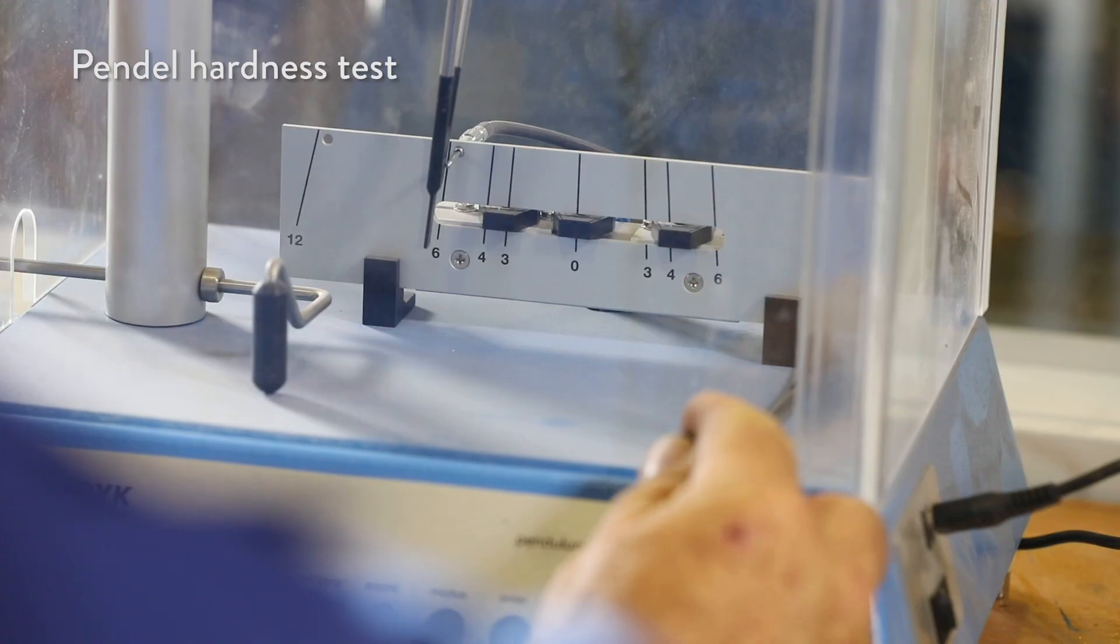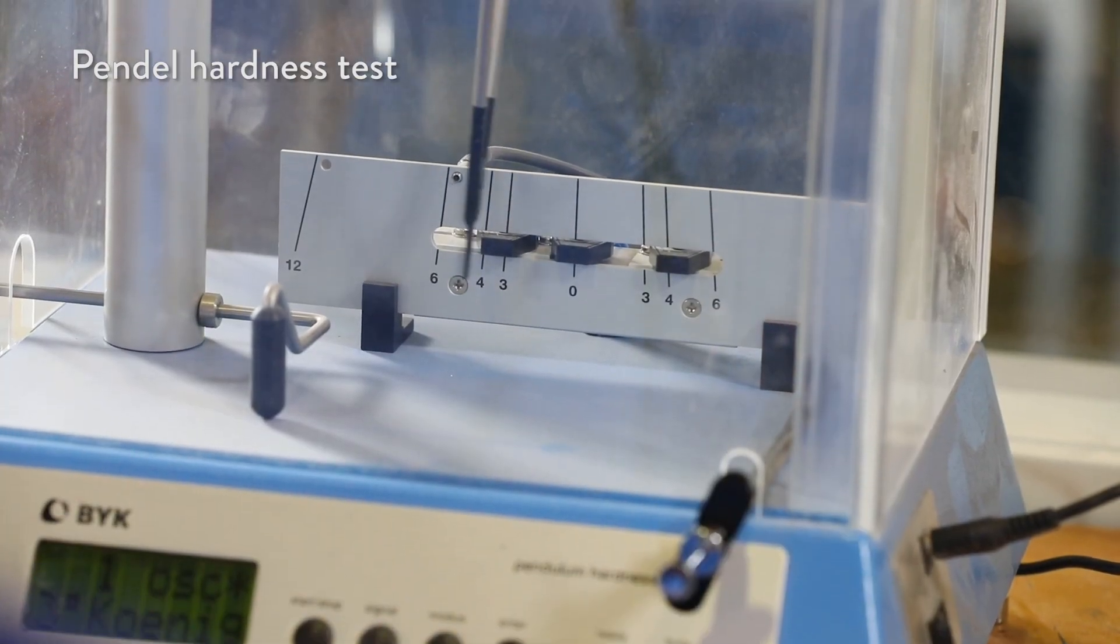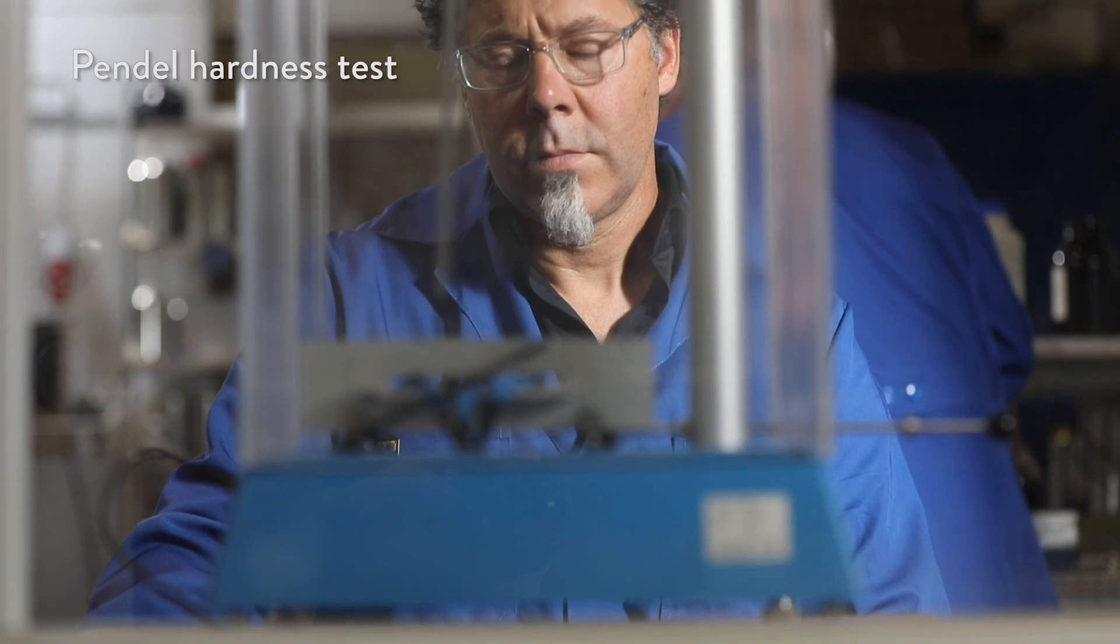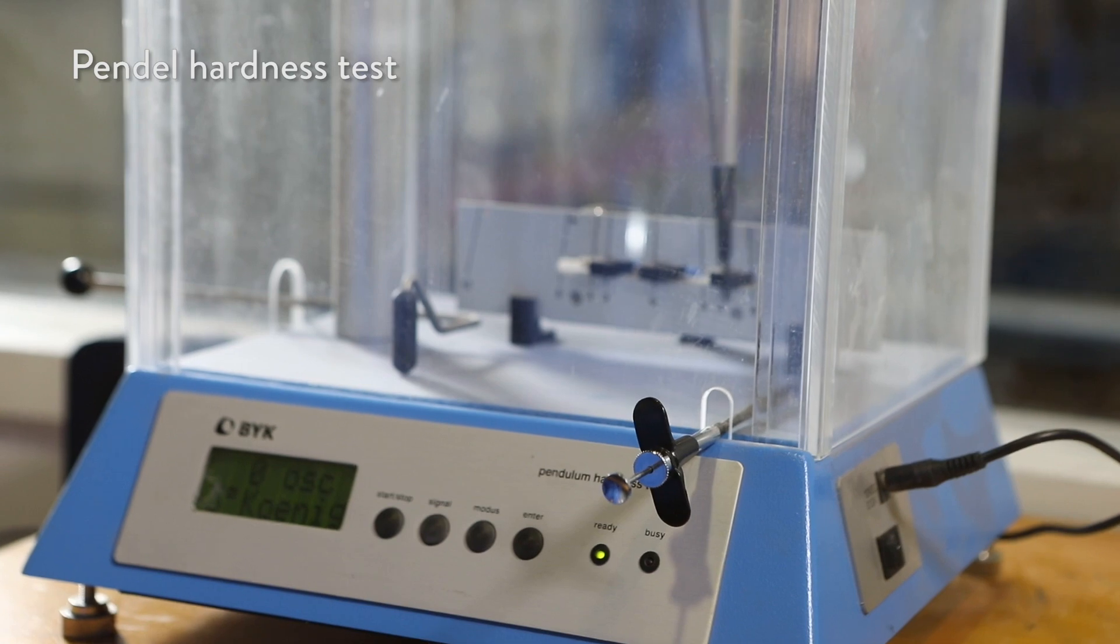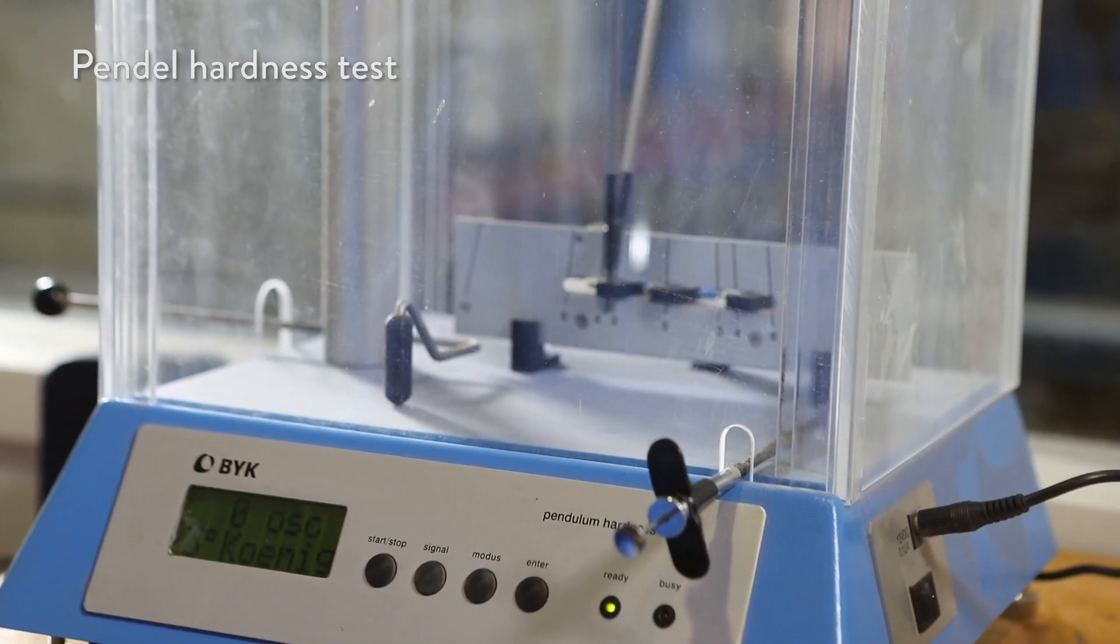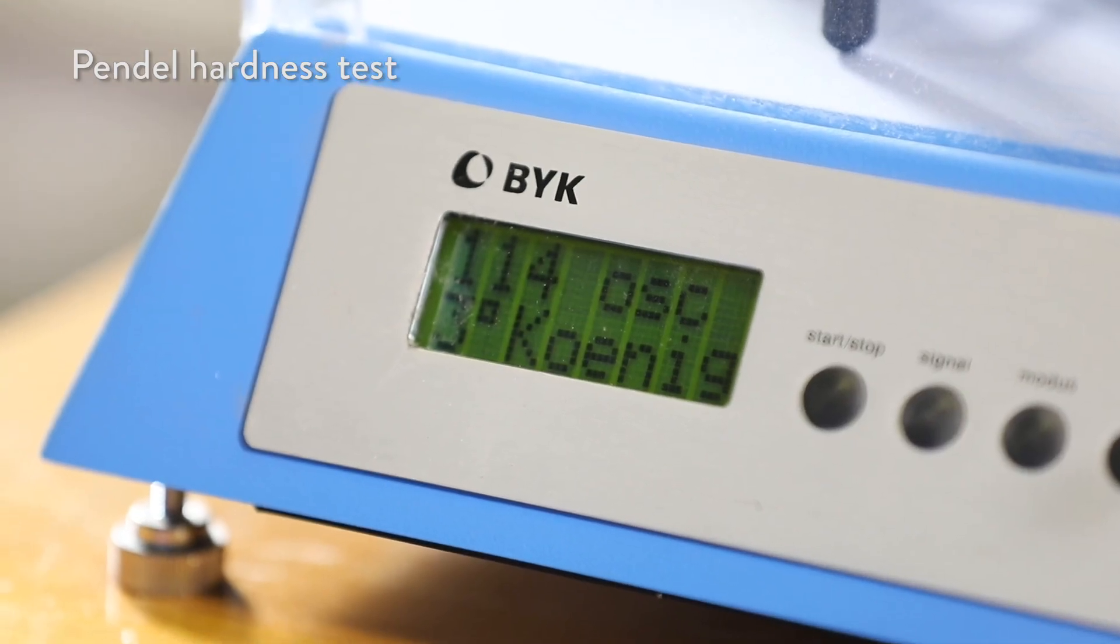The molecules of the 2K binder and hardener cross-link and build carbon carbon bridges. This results in an extremely hard surface. 2K has a pendle hardness of double to triple in comparison to traditional one-component paints.